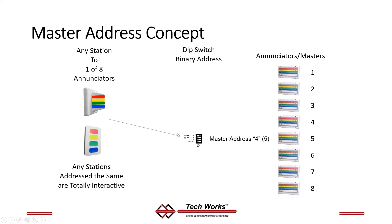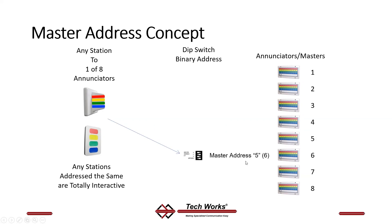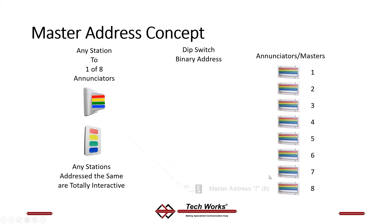Address four — the number four dip switch turned on — means it's going to appear on enunciator number five. If I turn on four and one, that's five — four plus one equals five — which is enunciator number six. Number seven is four plus two, which is six, which is really the seventh enunciator. And if all the dip switches are on, it's one plus two plus four equals seven, which is your eighth enunciator. That's the conversion of binary to base 10 numbers.